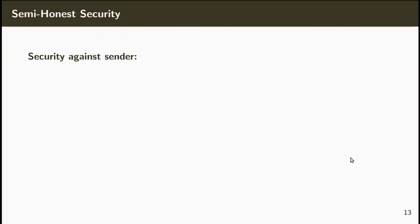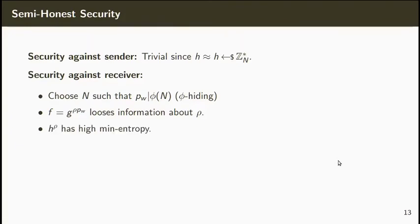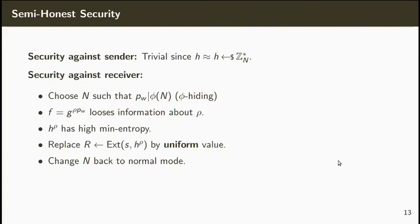Now let's see how we can prove semi-honest security. Security against a semi-honest sender is trivial since the value H is indistinguishable from a uniform value. For security against a semi-honest receiver, we first replace the RSA modulus in the CRS by a value n such that p_w divides phi(n). This change goes unnoticed under the phi-hiding assumption. Now we can argue that the value f = g^{rho} * p_w loses information about rho. This means that the value H to the rho has high min-entropy and thus we can replace r by a uniform value. Then we change the RSA modulus back to the normal mode, and we can conclude that we can replace f by a uniform value.